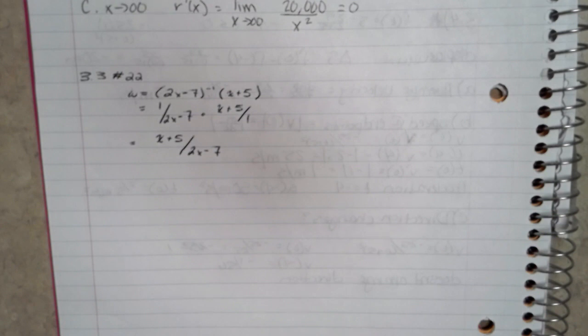even though this is written as a product, because we do not at this point in time know how to differentiate (2x minus 7) to the negative 1st.